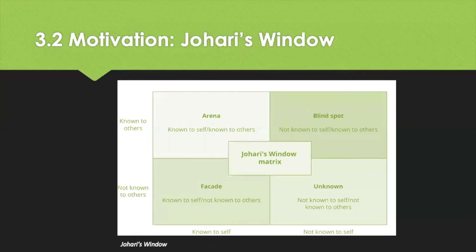The Johari Window can be used to help people better understand their relationships with themselves and with others. Individuals and their peers select adjectives from a list to describe the individual, then categorise them according to what is known to self and known to others. You have the arena — known to self and known to others; a blind spot — not known to yourself but known to others; the façade — known to self but not to others; and the complete unknown, which isn't known to you or to others.